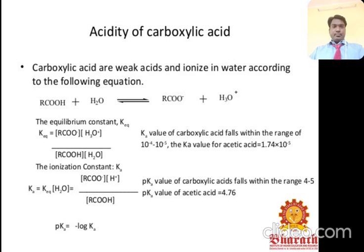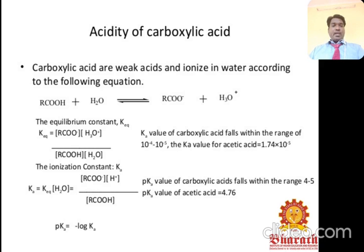Regarding the acidity of carboxylic acid: carboxylic acids are weak acids and ionize in water according to the equation RCOOH + H₂O ⇌ RCOO⁻ + H₃O⁺. The equilibrium constant Ka equals products divided by reactants. The Ka values of carboxylic acids fall within the range of 10⁻⁴ to 10⁻⁵. The Ka value of acetic acid is 1.74 × 10⁻⁵.